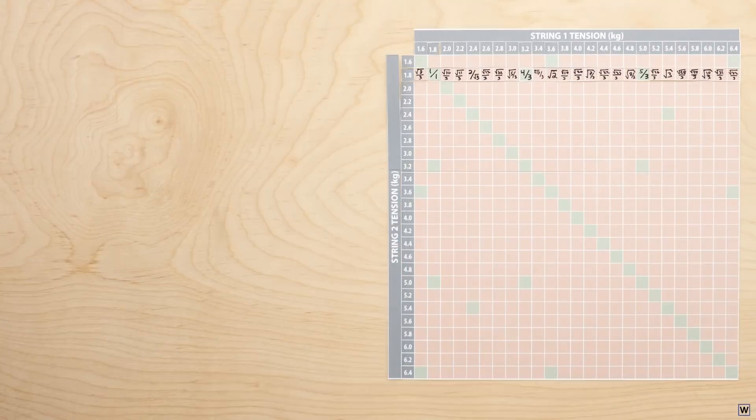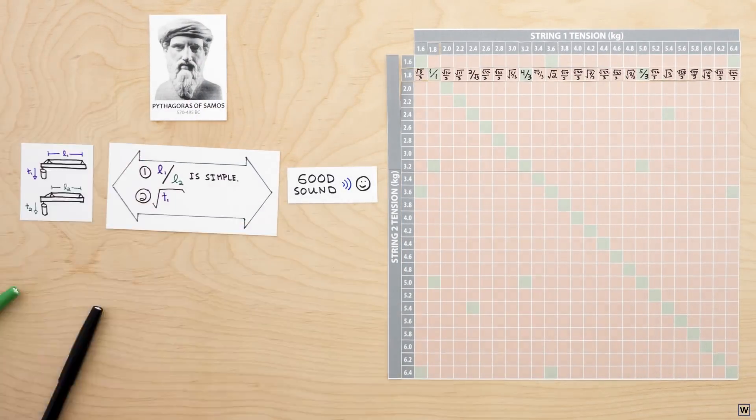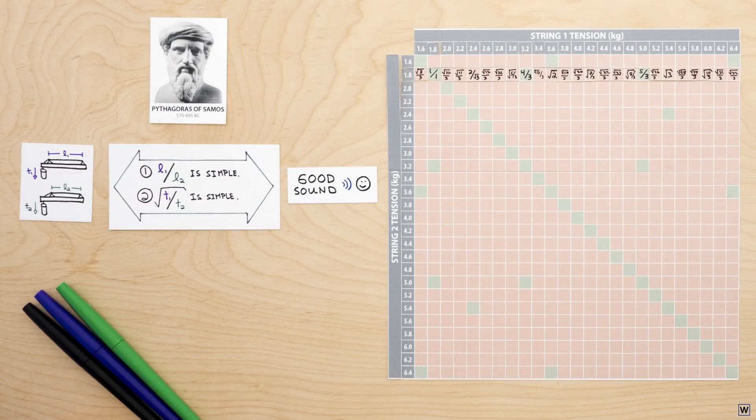This was Pythagoras' second remarkable discovery. Strings sound good together when the square root of the ratio of their tensions is simple.